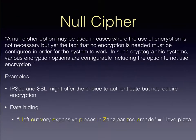A null cipher can be used where encryption is not necessary but you want to hide your information in a weak way. Examples are IPsec and SSL — they offer the choice to authenticate but not require encryption. You can authenticate the sender and receiver, but you're not hiding the information, so anybody with a sniffer would be able to pick up the packets and look at the payloads. Data hiding is another null cipher — for example, taking 'I love pizza' and hiding it as the first letter in each word of a sentence. This is also a form of steganography — hiding data inside images or text.